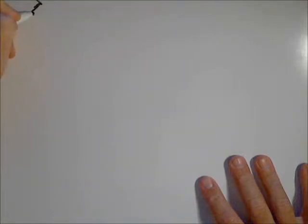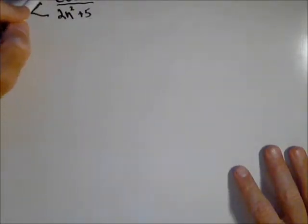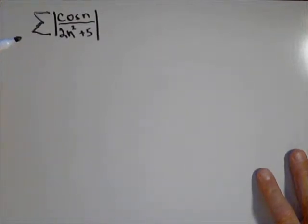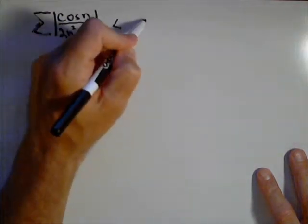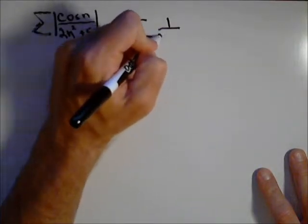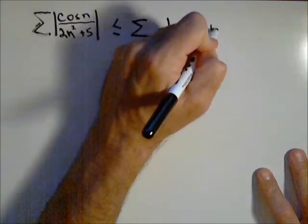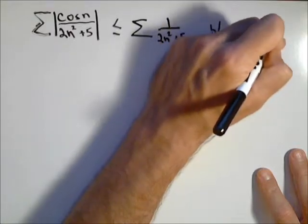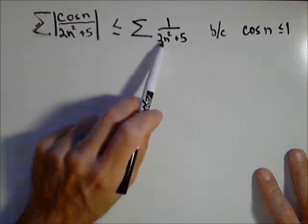The first series we're going to look at with this test is cosine of n over two n squared plus five. What I'm going to do is take the absolute value of this, so now I don't ever have to worry about it being negative. This series I know is less than or equal to one over two n squared plus five, because the absolute value of cosine of n is less than or equal to one.